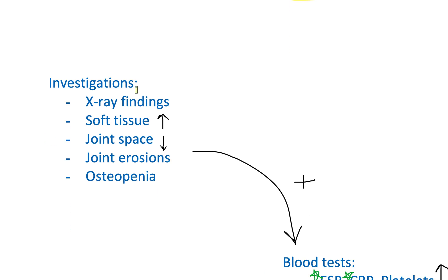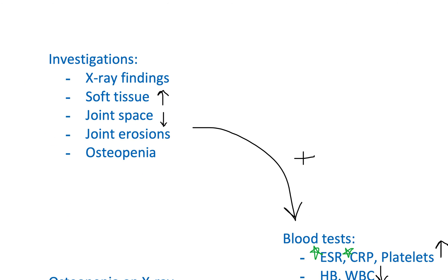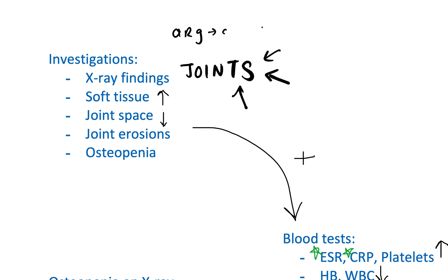Moving on to investigations: you are looking for X-ray findings. On X-ray, you will see soft tissue enlargement around the joints, a reduction in joint space, some level of synovial fluid, joint erosions, and osteopenia.